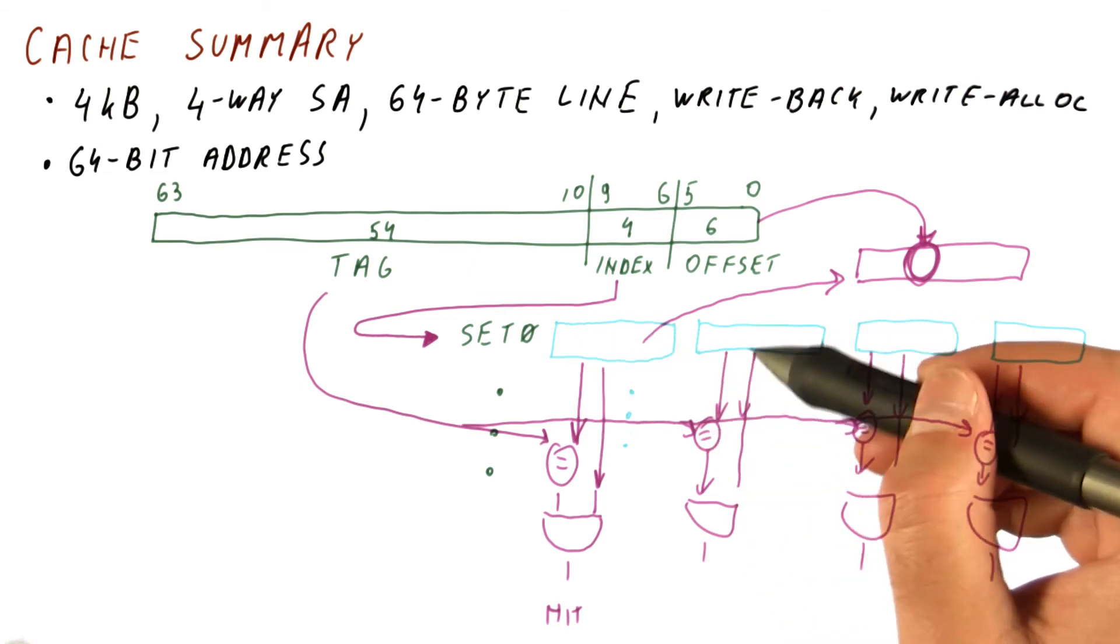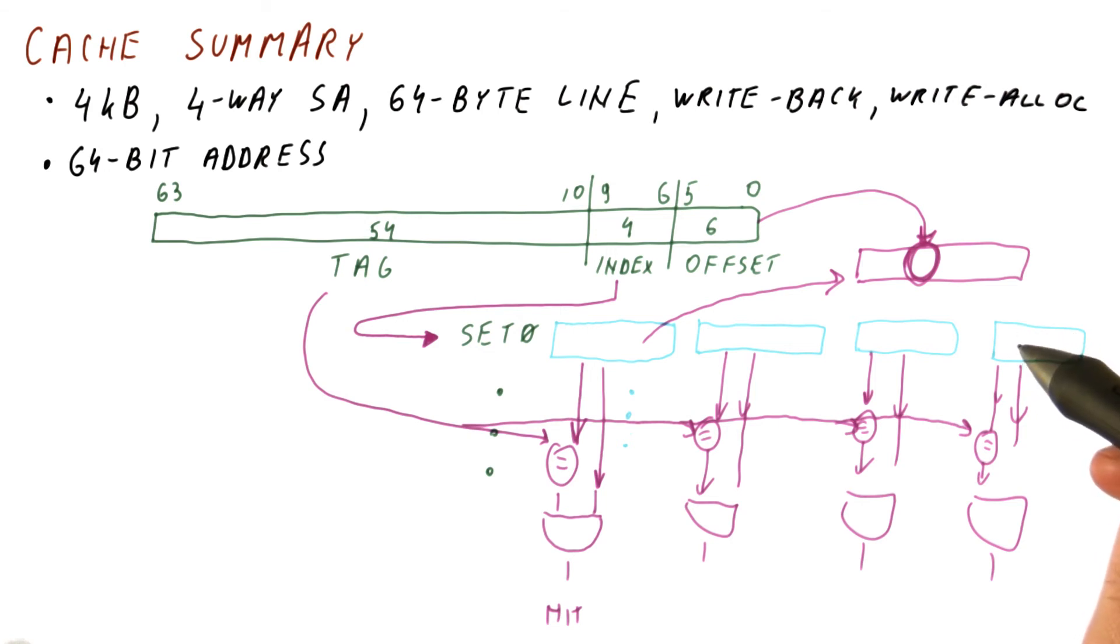we will check the LRU counters in these to find the one that is 0, check the dirty bit of that block. If it is 1, we will first take this data and write it to memory and then put the new block here. If it is 0,